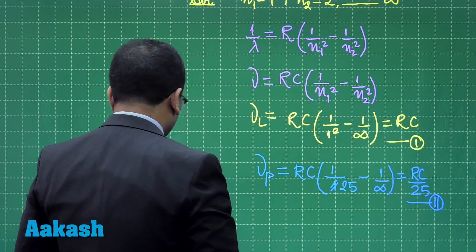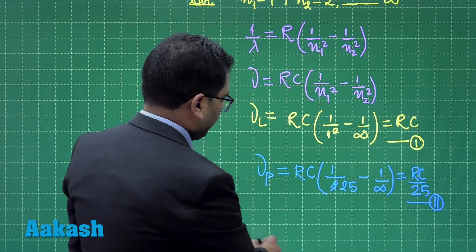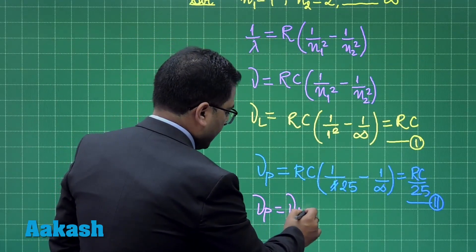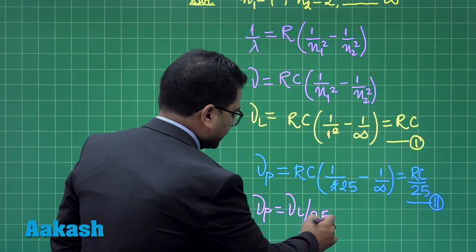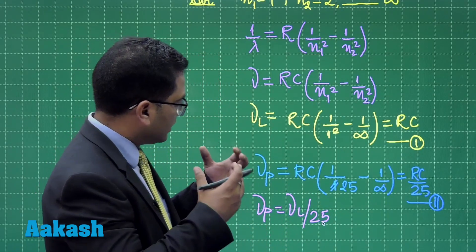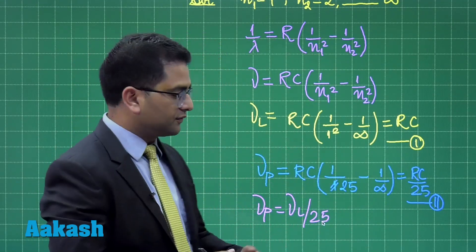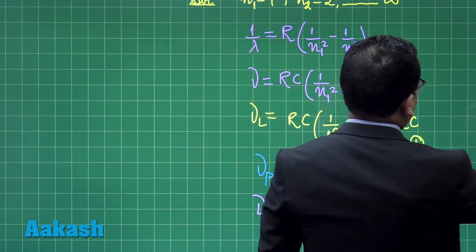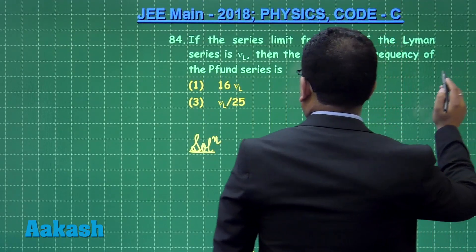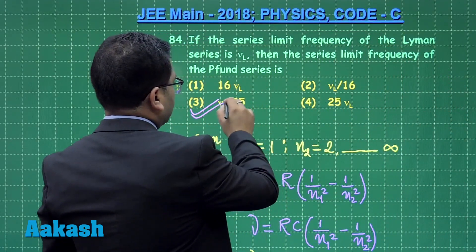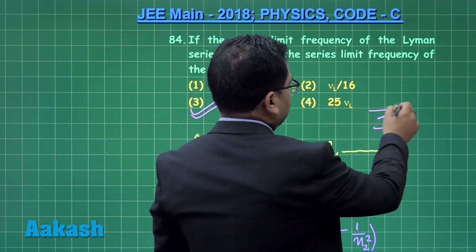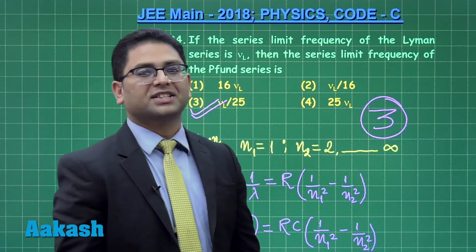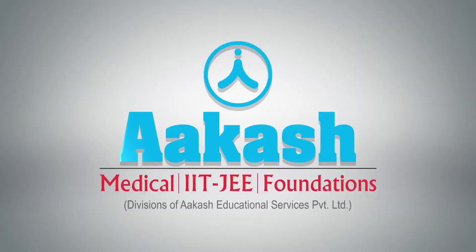Now there is equation 1 and equation 2. So quite obviously nu P is going to be nu L by 25. That is the relation between the limiting frequency of the Lyman and the Pfund. So here is the correct option. Question number 84 demands the correct option to be 3. Let us move to question number 85.